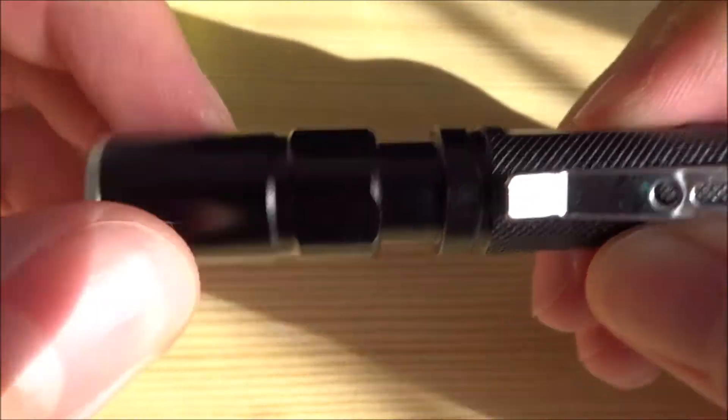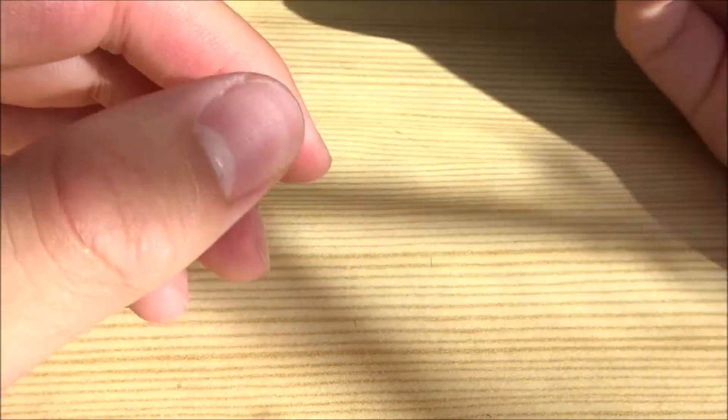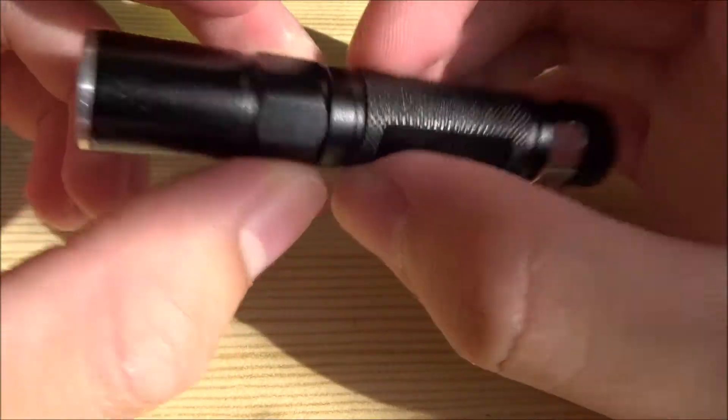It does have a zoom feature, very loose, so easy to do one-handed to change it from floodlight to spotlight. It doesn't show how bright it is here because the sun's in the way, but we'll do a light test later. It's actually fairly bright for the size.